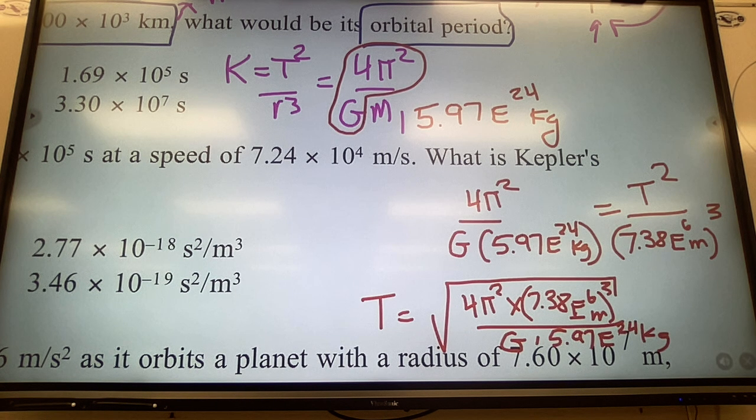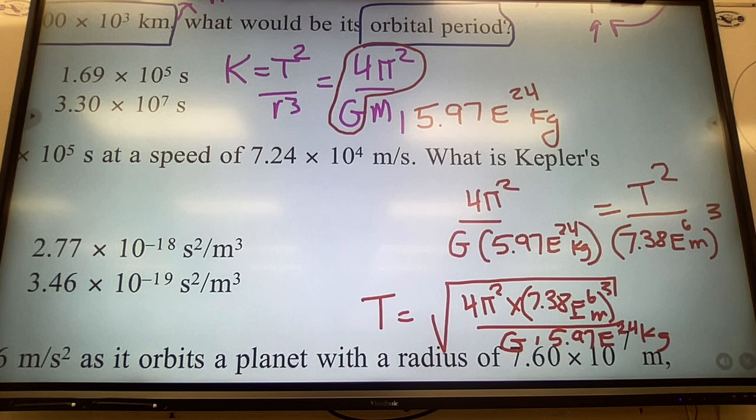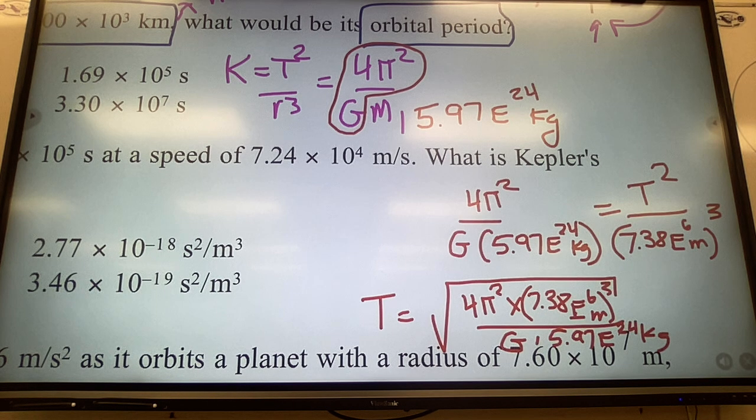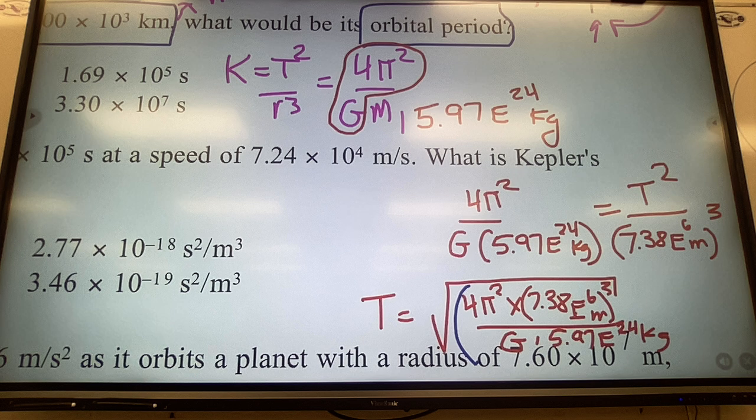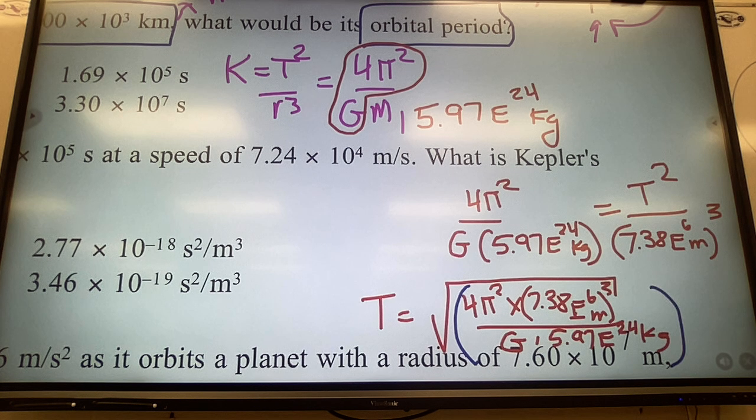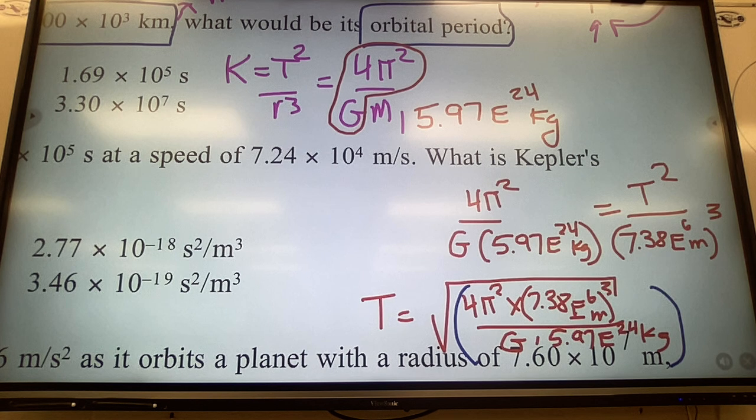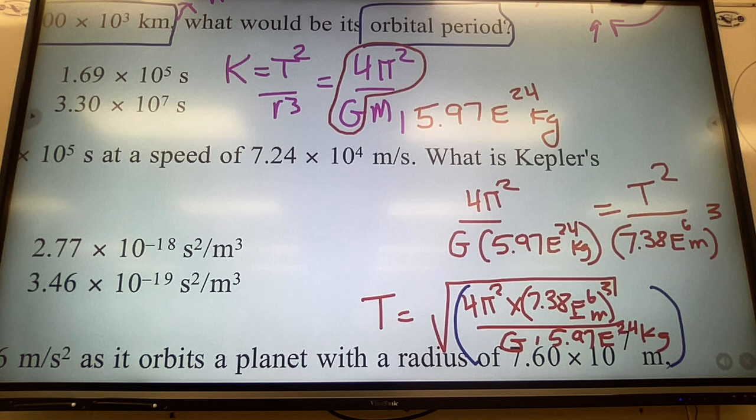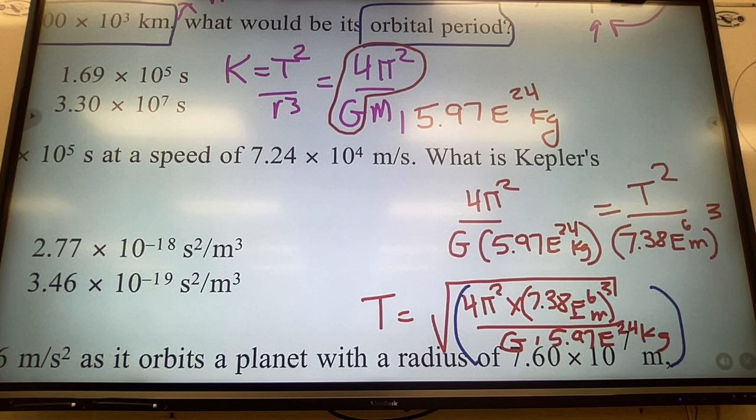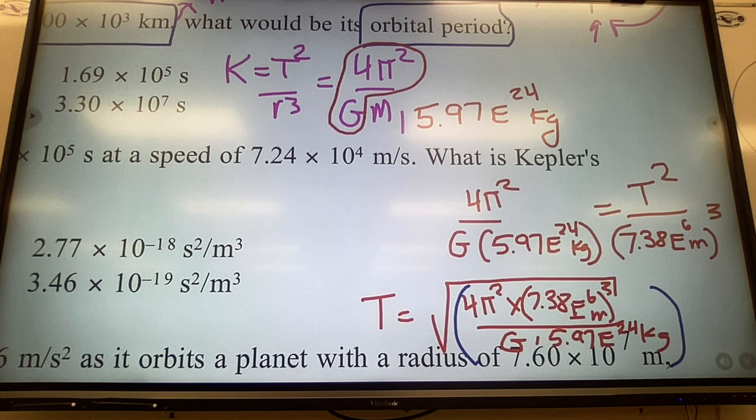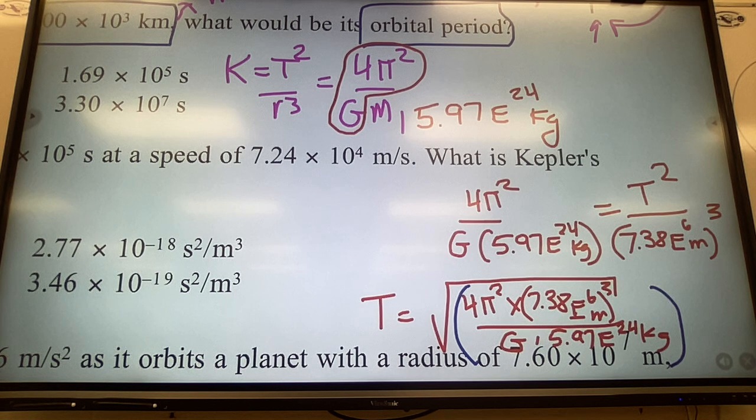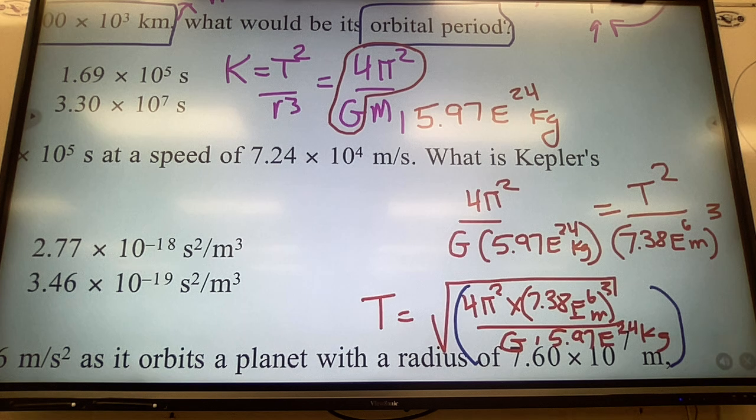So if I'm going to solve for T, let me speed this up. T equals the square root of [4π² × (7.38×10⁶ m)³] / [G × 5.97×10²⁴ kg]. See how complex this gets? But it's not impossible. I strongly recommend that you get all of this calculation done first, and then square root it.